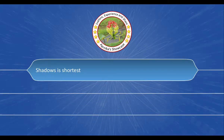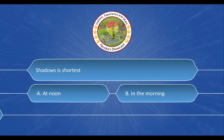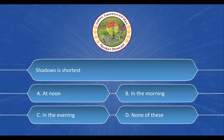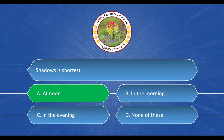Next question: Shadow is shortest — and the options are: A. At noon, B. In the morning, C. In the evening, D. None of these. And the correct answer is option A. At noon.